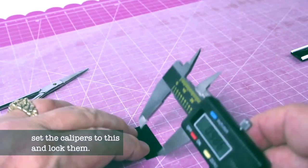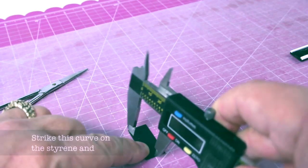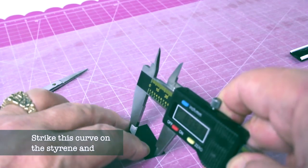The first thing is the top of the shell is curved so we need to strike a curve, something like that.